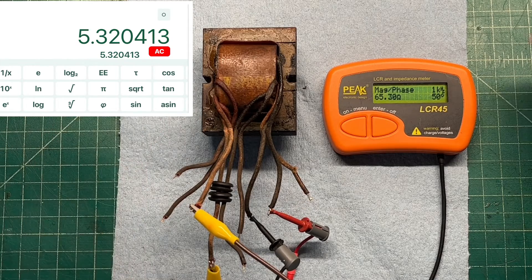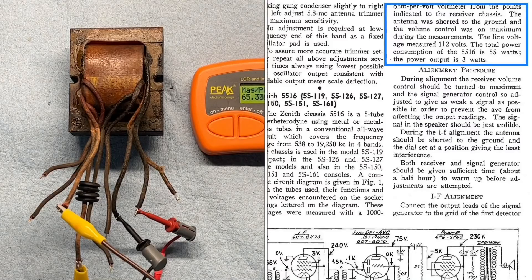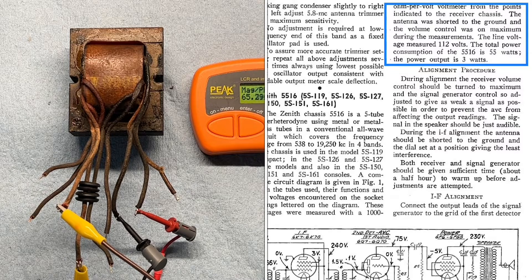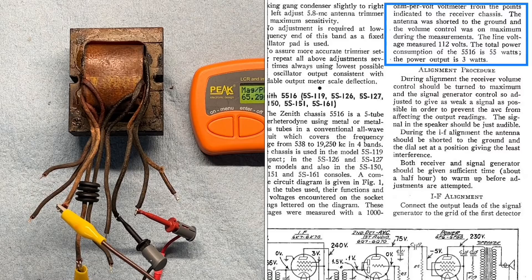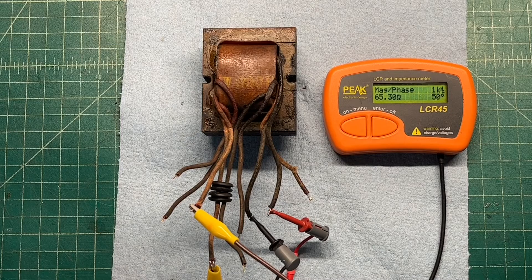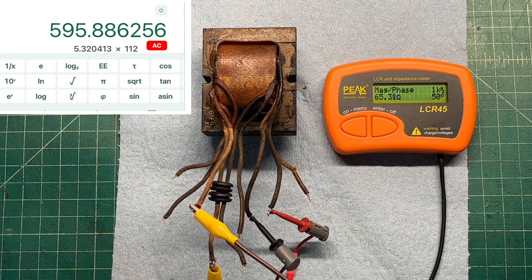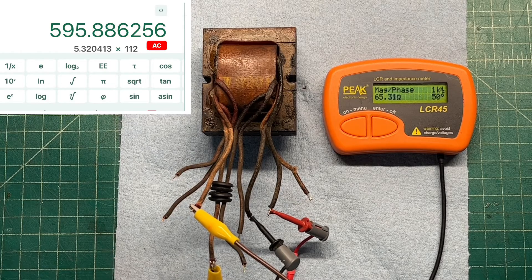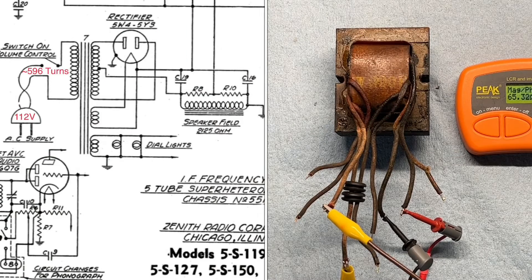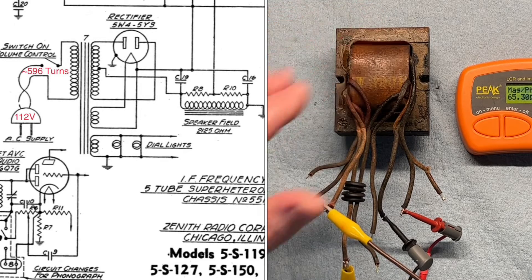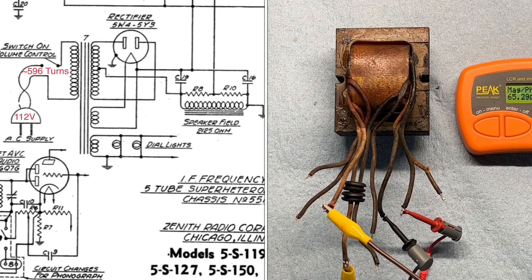So back in the day if you look back at some specs for this transformer, this radio, about 112 volts AC was the line input voltage. I can simply take the 5.32 and times 112 and that gives me 596 turns roughly is what would be in the transformer for the primary winding.